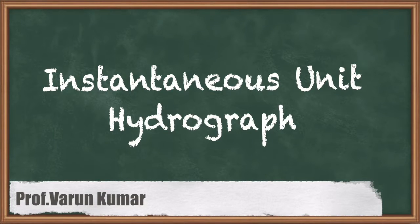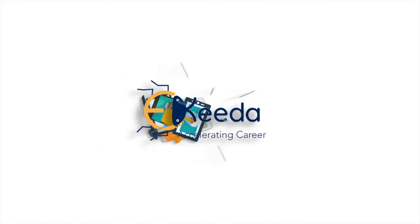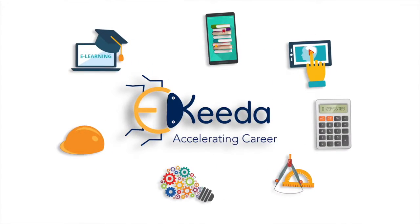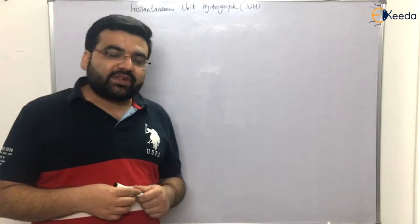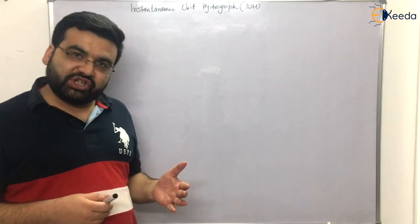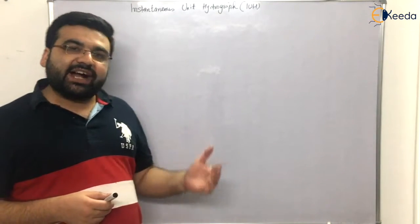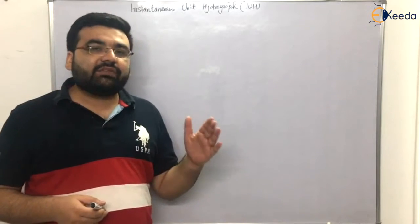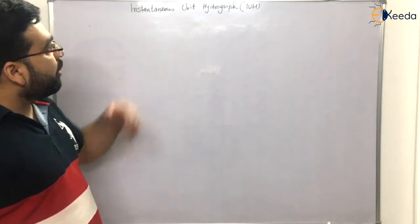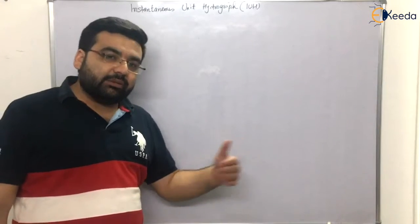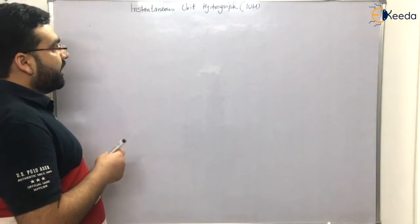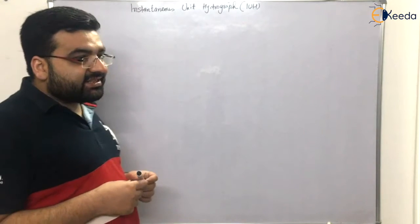Subject: Hydrology. Chapter: Hydrograph Analysis. Topic: Instantaneous Unit Hydrograph. Students, we have discussed the method of superposition, the S-curve, what is a hydrograph, what is a unit hydrograph, what is ERH — all of that. This is a small topic recently added to the GATE syllabus: the Instantaneous Unit Hydrograph. Let us first discuss the concept.